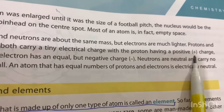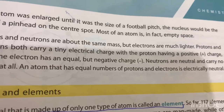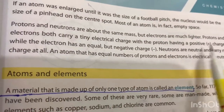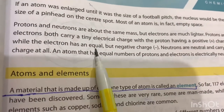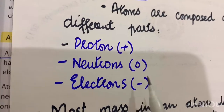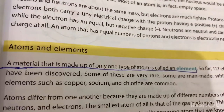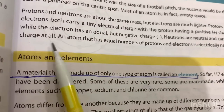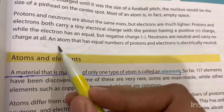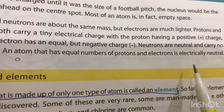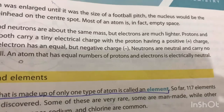Protons and electrons both carry a tiny electrical charge. The proton has a positive charge, while the electron has an equal but negative charge. Neutrons are neutral and carry no charge at all — their charge sign is zero. An atom that has an equal number of protons and electrons is electrically neutral.